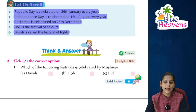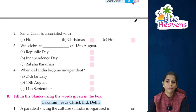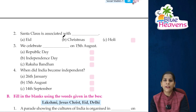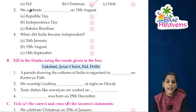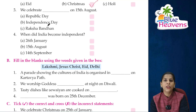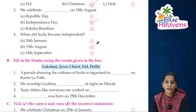Now we will do the exercise. Check the correct option. Which of the following festivals is celebrated by Muslims? — Eid. Santa Claus is associated with which festival? — Christmas. We celebrate Independence Day on 15th August. When did India become independent? — 15th August 1947.